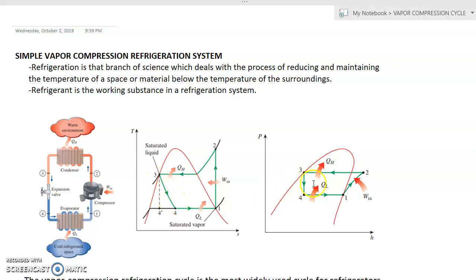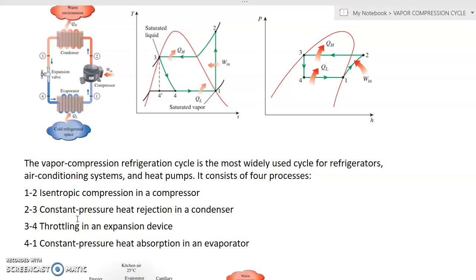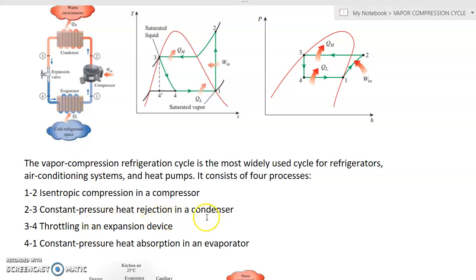The vapor compression refrigeration cycle is the most widely used cycle for refrigerators, air conditioning systems, and heat pumps. The four processes are: process one to two — isentropic compression in a compressor, where s is equal to c, so s sub one is equal to s sub two.